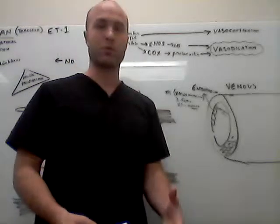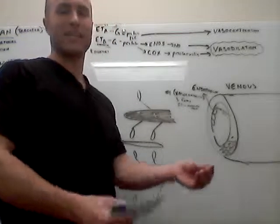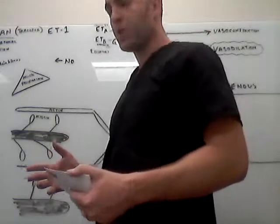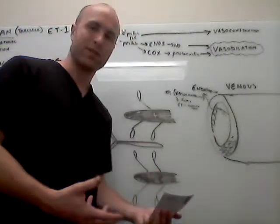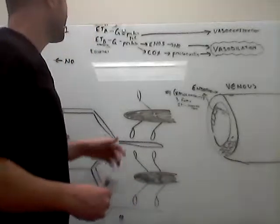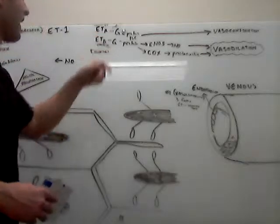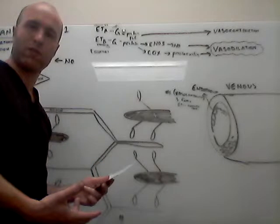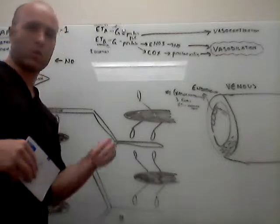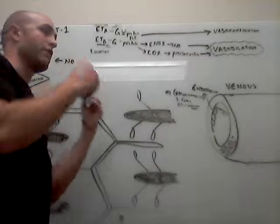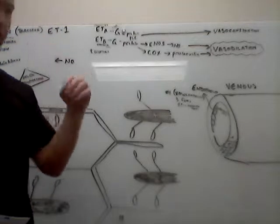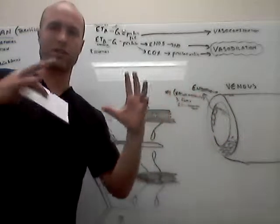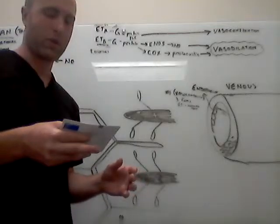There's also different receptors: ETA and ETB receptors that ET1 will bind to. If ET1 binds to an ETA receptor, these are located in the vascular smooth muscle and they're associated with G-coupled proteins and phospholipase C. Essentially what this does is when ETA is bound, it's going to cause vasoconstriction. We do not want that in the case of pulmonary arterial hypertension.